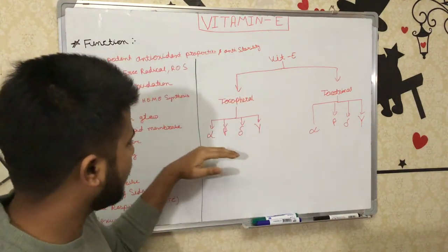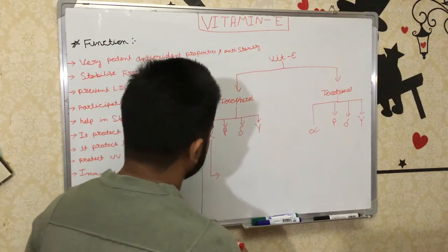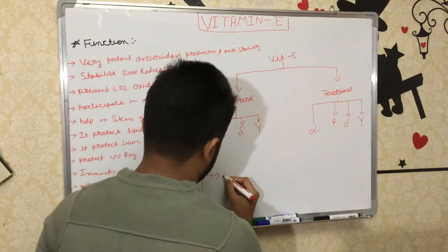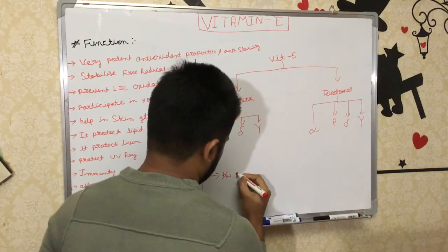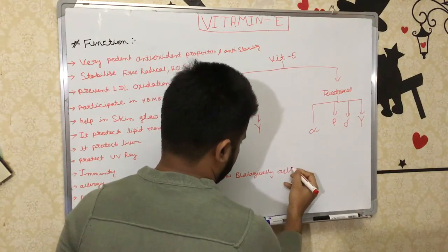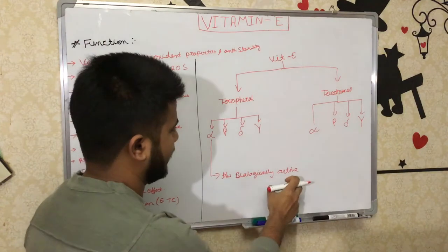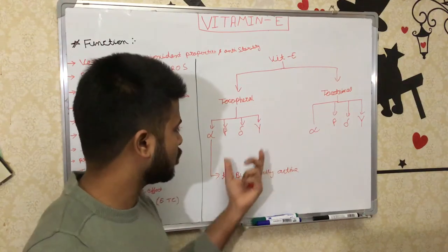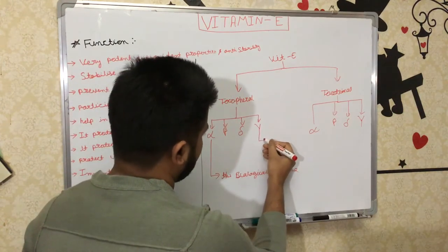Now let's discuss alpha, beta, delta, and gamma. First, alpha — this is the most biologically active form in the human body. Out of all eight Vitamin E subgroups, only alpha-tocopherol is biologically active. All eight can perform some function in the human body like Vitamin E, but alpha is the most importantly biologically active. About gamma tocopherol — in some books it is written that in the North American diet it is found in very rich amounts.